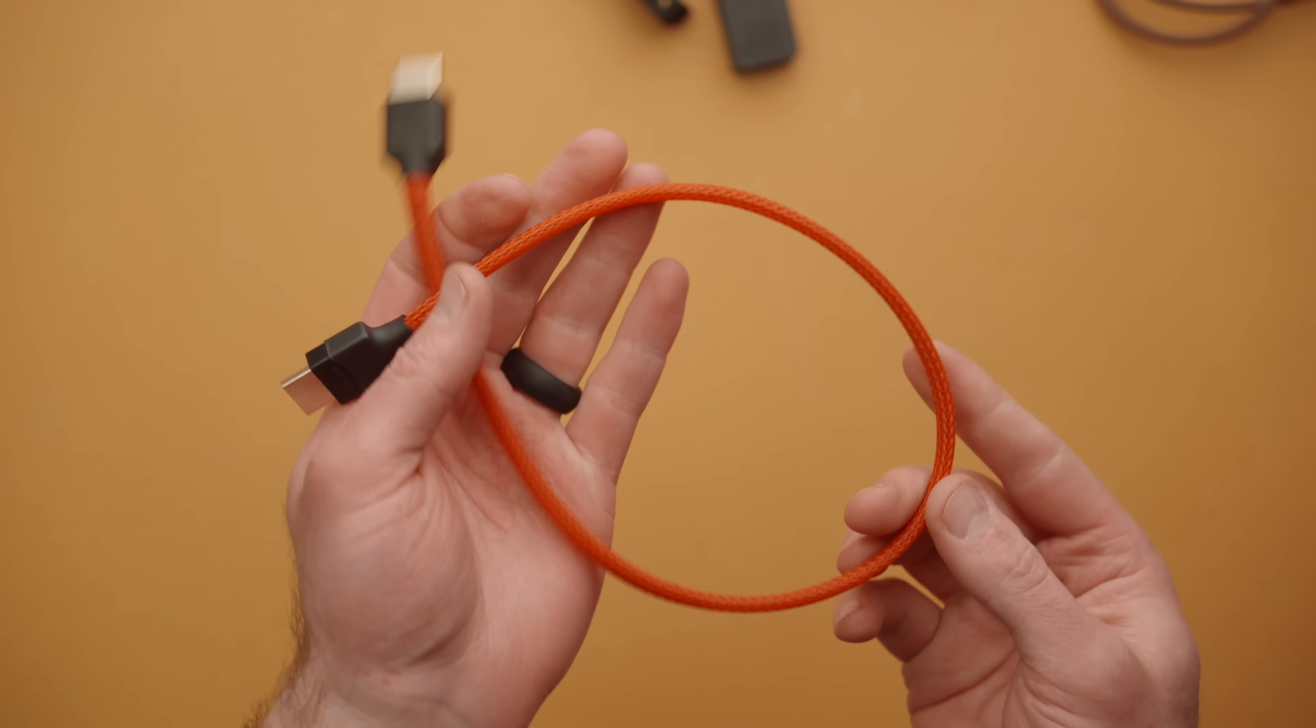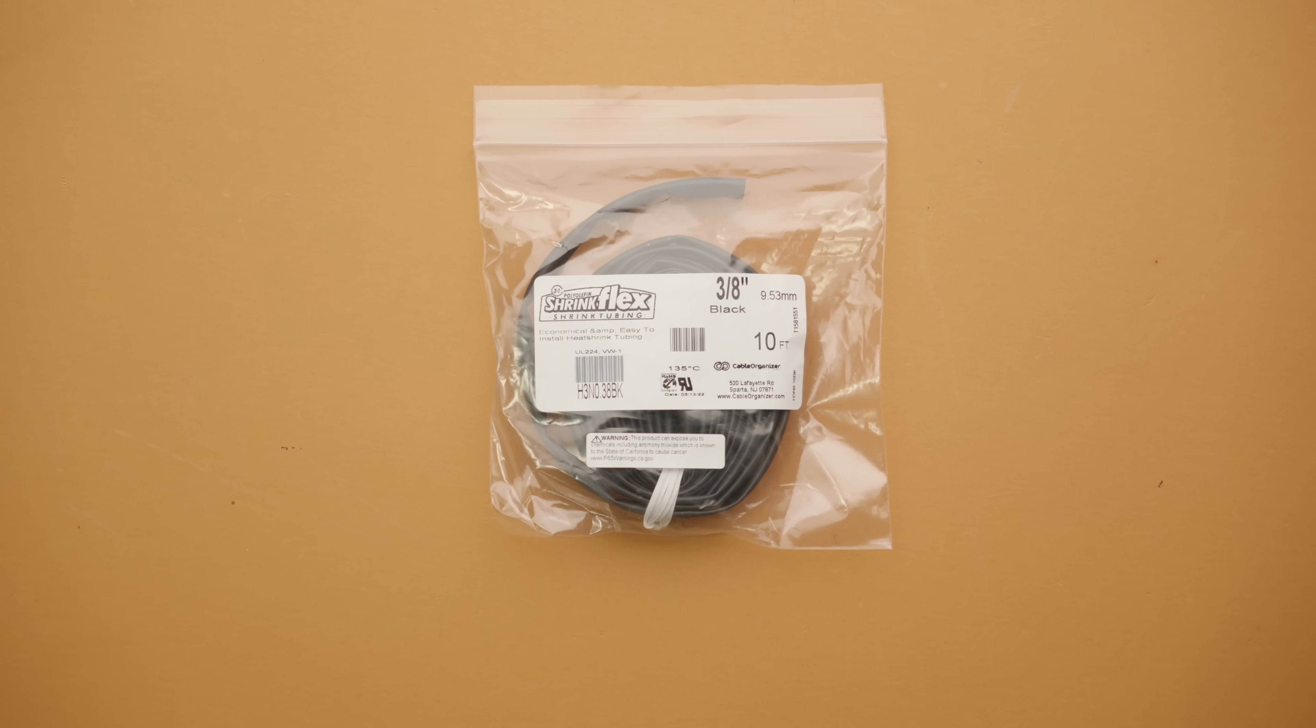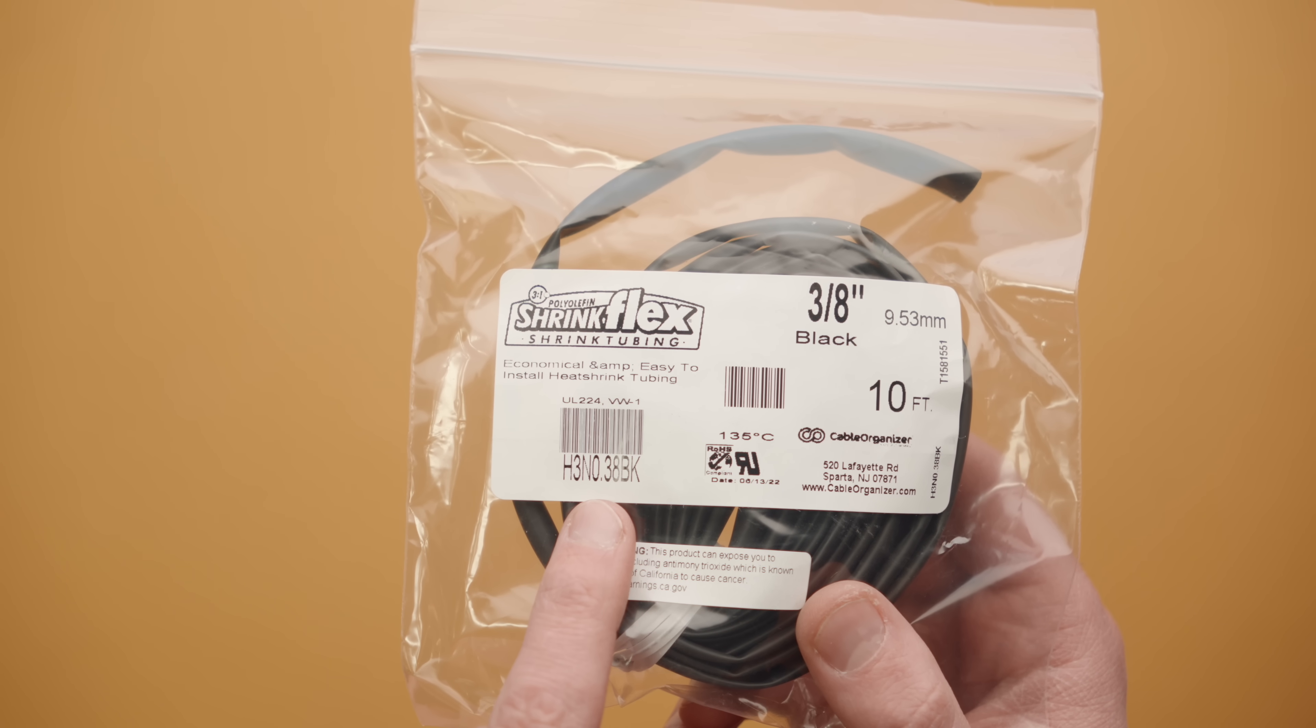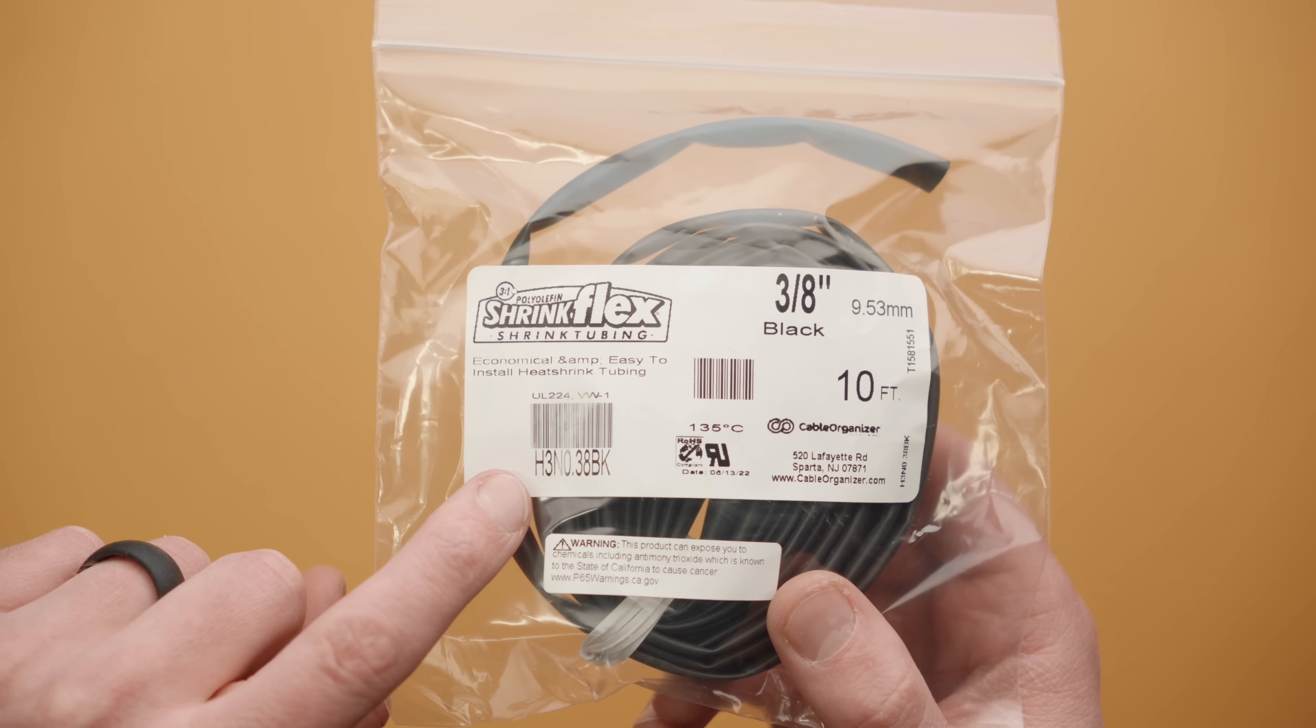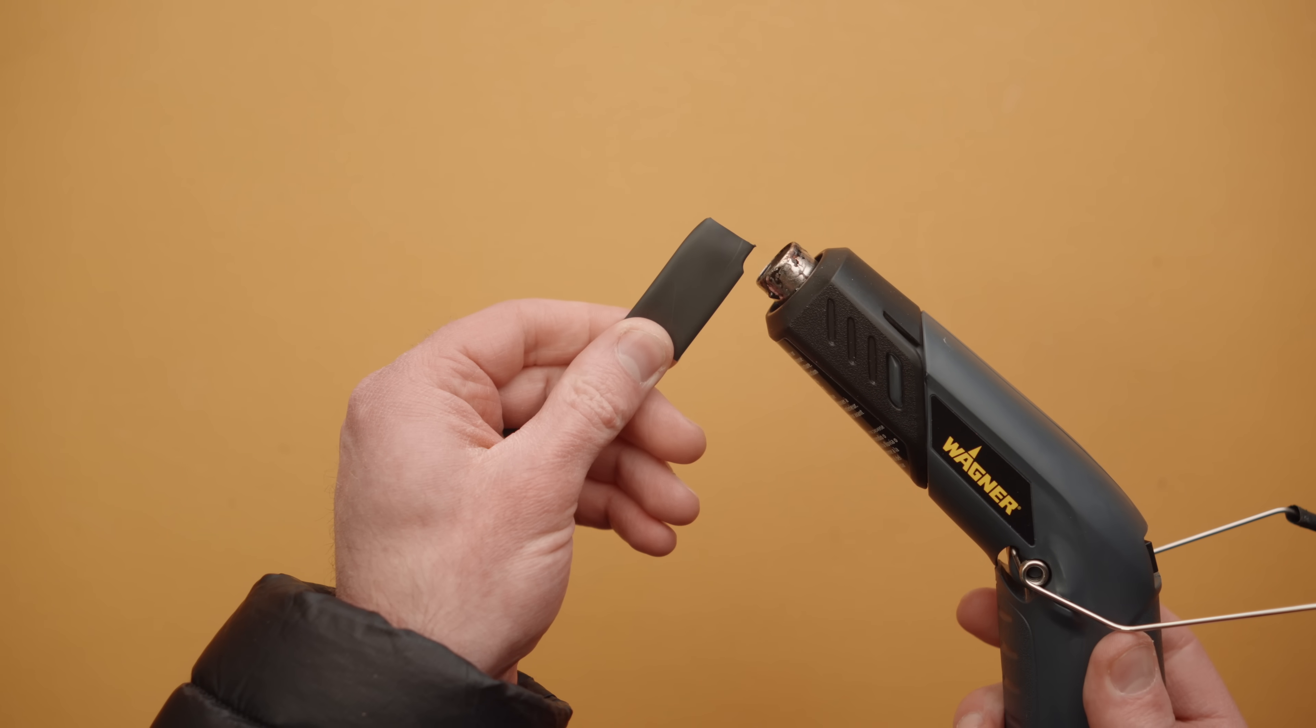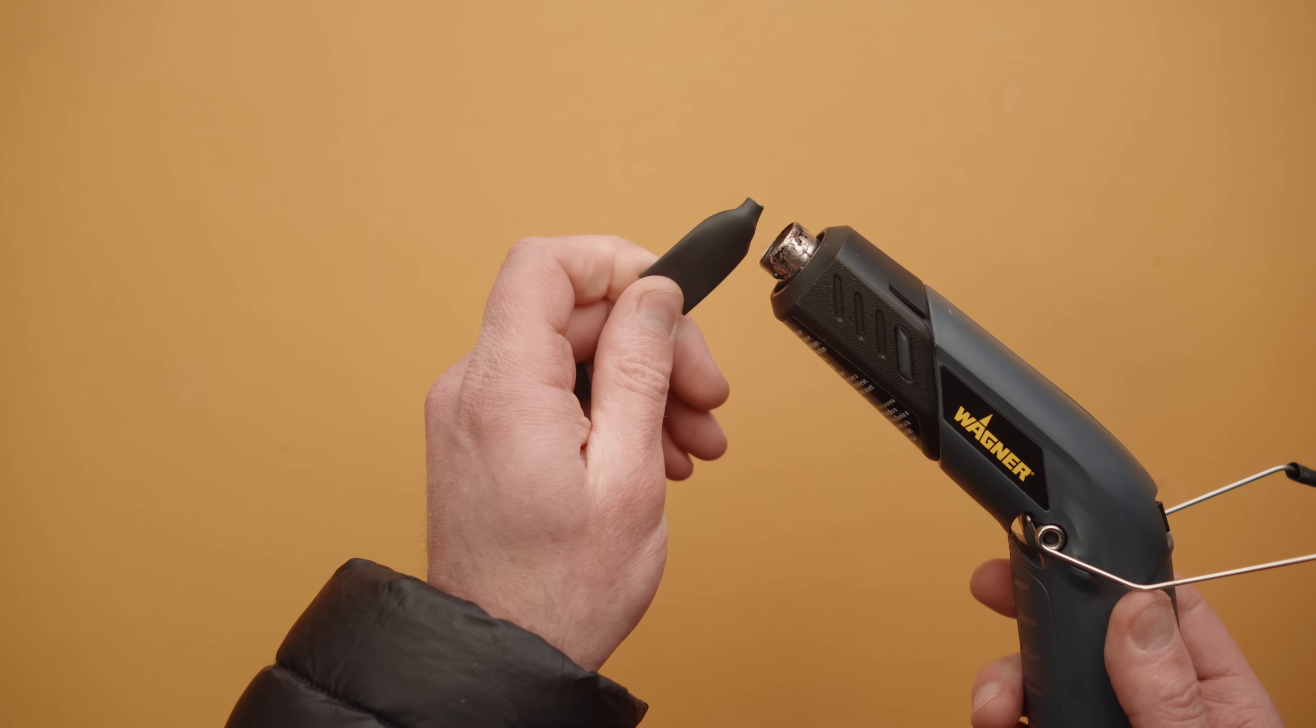Next, we need shrink wrap or shrink flex, which is the brand that I've gone with. The two specs you need to pay attention to is the size and then the shrink ratio. Here I have three eighths for our size and the shrink ratio is three to one. Meaning when you heat it up, it'll shrink down to one third the size of the original.